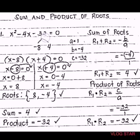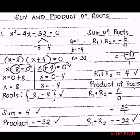What are the factors of negative 32? I use negative 8 and 4 because if I multiply negative 8 by 4, it is negative 32. And if I add negative 8 plus 4, it is negative 4. So the factors are (x minus 8) times (x plus 4) equals 0. Then equate both with 0 to get the values of x, or the roots.